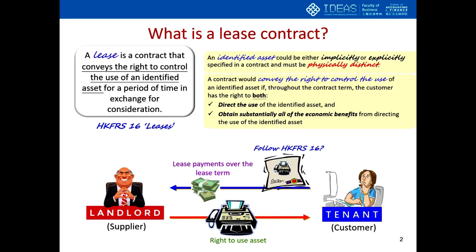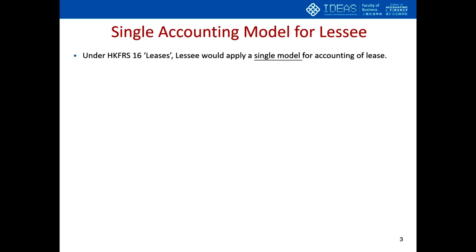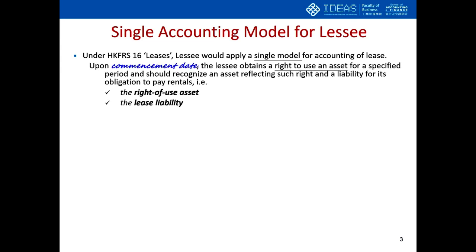If we can prove that the rental or service arrangement satisfies the definitions of lease under HKFRS 16, we can then call the supplier the lessor and the customer the lessee. Both the lessor and the lessee will have to account for the lease in their financial statements in accordance with HKFRS 16. We will focus on the accounting for the lessee. Under HKFRS 16, the lessee applies a single model for accounting of leases. Upon the commencement date — the day the lessee obtains the right to use an identified asset — the lessee should recognise a right-of-use asset as a non-current asset and also a lease liability.